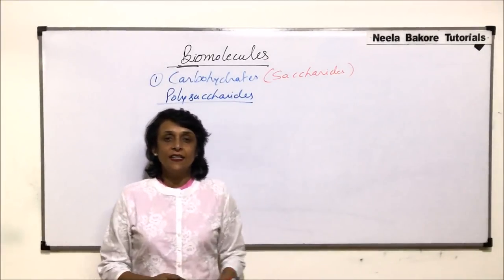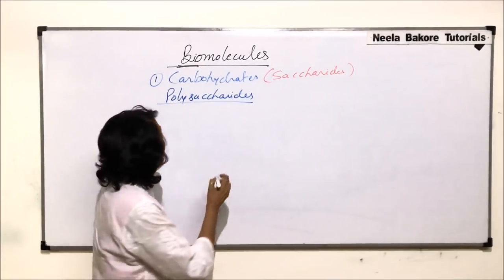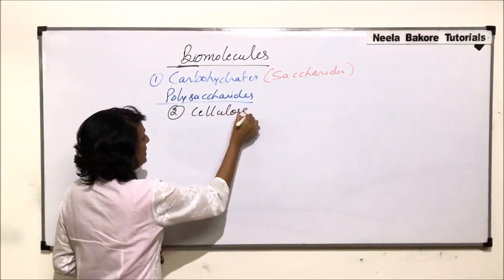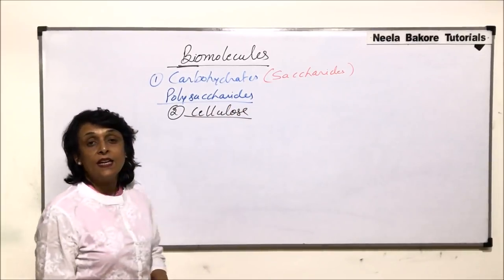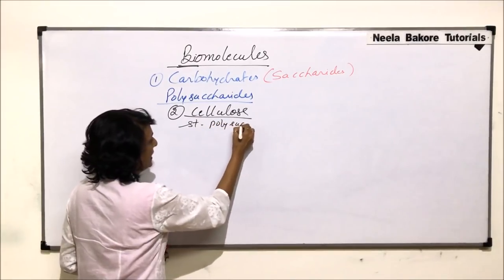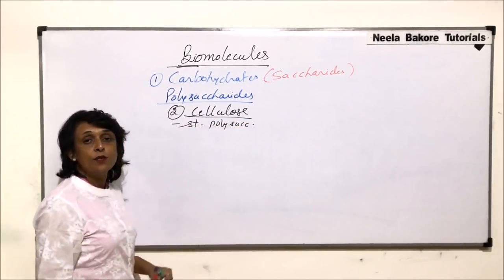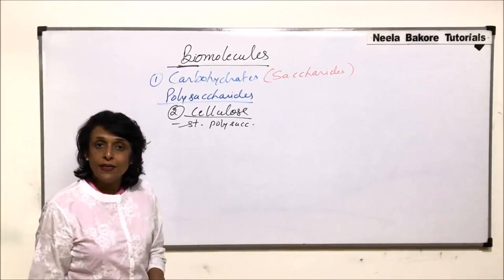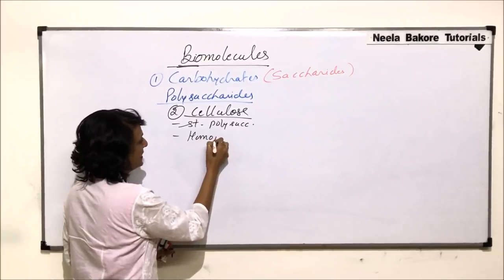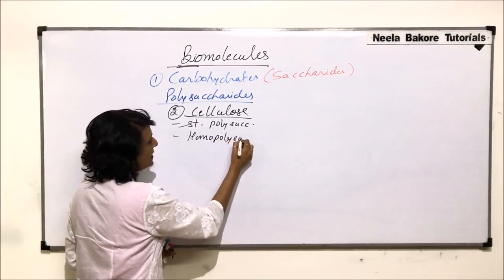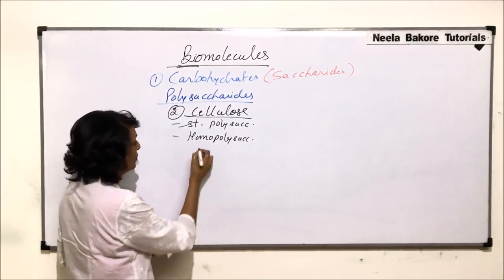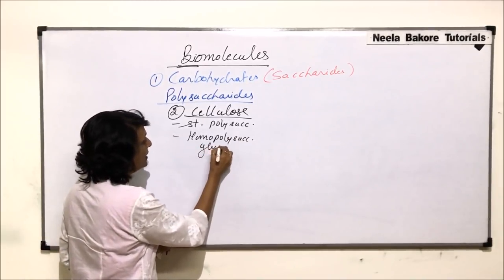The next polysaccharide we are discussing is cellulose. Cellulose is a structural polysaccharide because it helps in the formation of cell wall in plants. It is a homopolysaccharide, meaning it is made up of only one type of monomer unit, and that monomer unit is glucose.